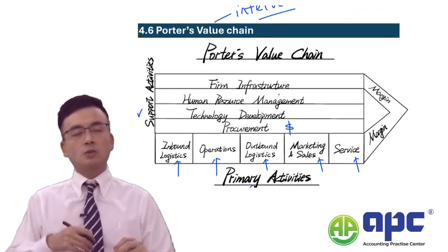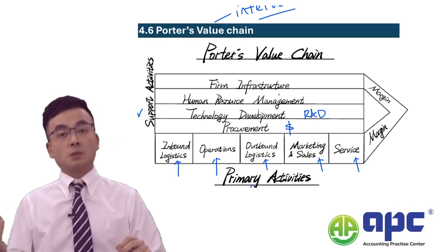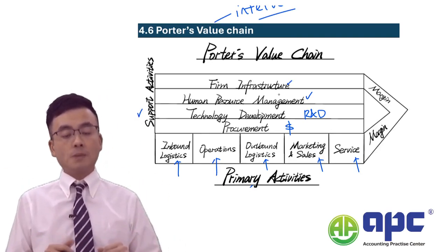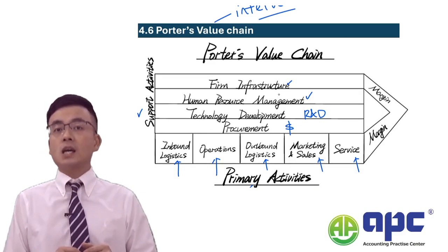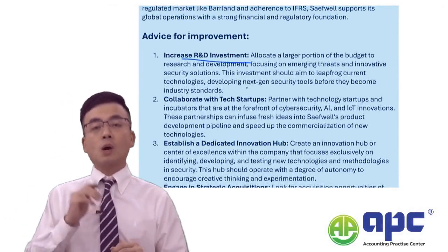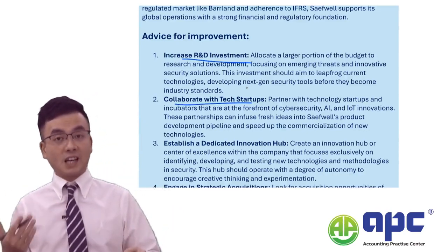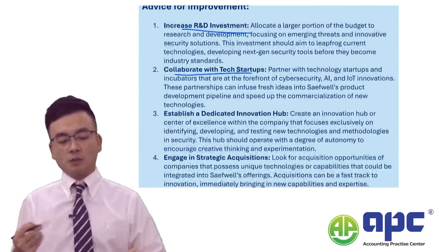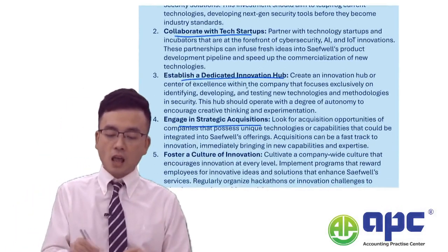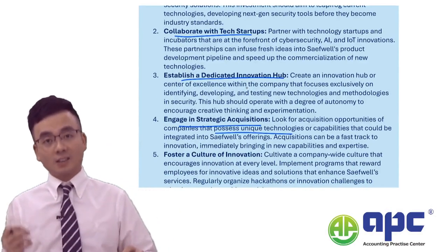On the other hand, support activities include procurement, technology development — meaning R&D — and HR as well as firm infrastructure, which covers where money comes from and how we set up reporting lines. I would highly recommend Safeway to improve expenditure on R&D, possibly collaborating with tech companies, especially AI startups, and establishing a dedicated innovation hub to keep up with the latest technology changes. Strategic acquisitions to possess unique technologies should also be considered.